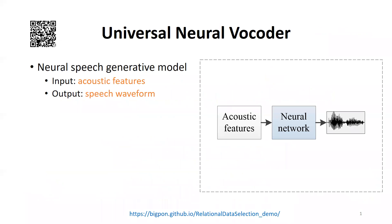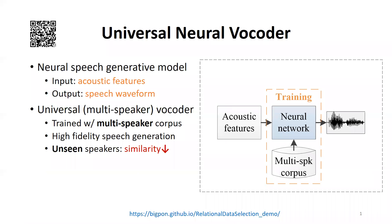A neural vocoder is a speech-generative model to convert input acoustic features such as mel spectrogram to raw speech waveform samples. People usually train a universal neural vocoder using a huge multi-speaker corpus for arbitrary speakers. If the amount of training data is sufficient, the universal vocoder can achieve high-fidelity speech generation.